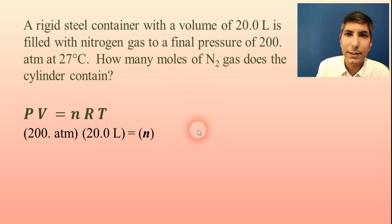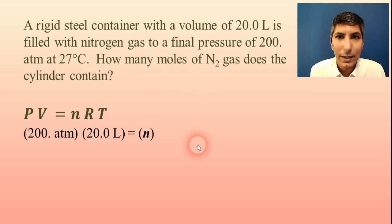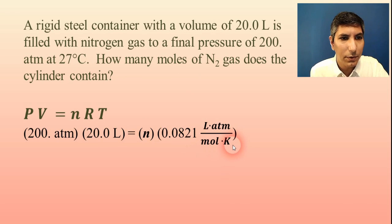R is that constant that we talked about, 0.0821, liter atmospheres per mole kelvin. And then T is for temperature, 27 degrees Celsius. We need to convert that to kelvin. So when you add 273, that becomes 300 kelvins.